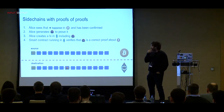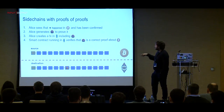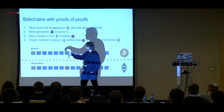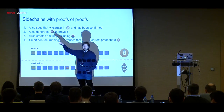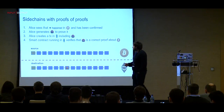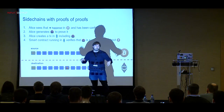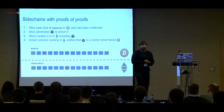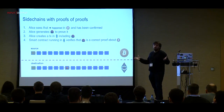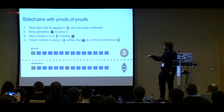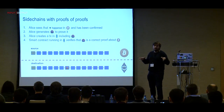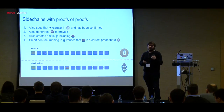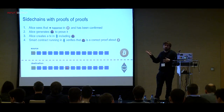Here's the protocol. Alice sees an event on the Bitcoin blockchain — for example, she initiates a payment and waits for confirmation. Once confirmed, Alice generates a proof of proof of work and includes it in a transaction on the destination blockchain, waiting for that to also be confirmed. The smart contract on Ethereum Classic can then take that proof as input, validate it, confirm it's a true account of events, and react in whatever way the smart contract developer wishes.